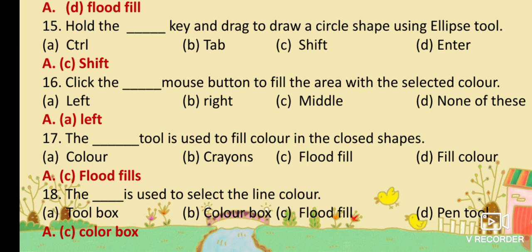MCQ No. 18: The dash is used to select the line color. Option A: Toolbox. Option B: Color Box. Option C: Flood Fill. Option D: Pen Tool. Your answer is Option B: Color Box. The color box is used to select the line color.